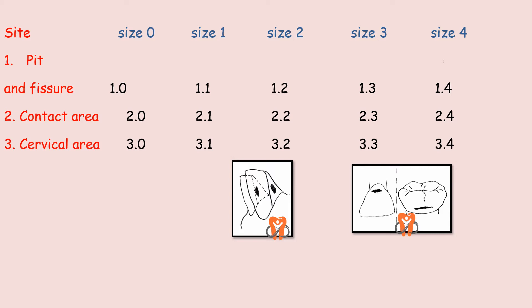Sites and sizes are placed in the form of a chart — sites 1, 2, and 3 on one axis, and sizes 0 through 4 on the other. For example, a lesion at the contact area of moderate size is classified as 2.2, and a lesion at the cervical area of moderate size is classified as 3.2.